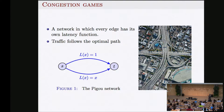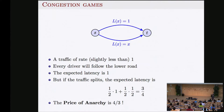If 10,000 cars go through the city edge, latency is one hour; if 20,000 cars go through, latency is two hours. You are a driver at S wanting to go to T. Suppose traffic is 0.99 — you'll follow the lower path because your latency will be 0.99 instead of one. Everybody thinks like you, everybody goes on the lower path, and the latency for each one is almost one.